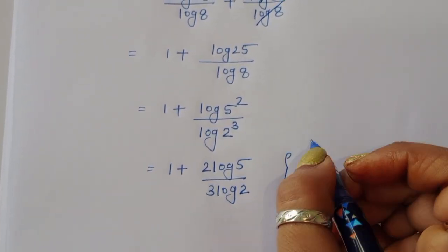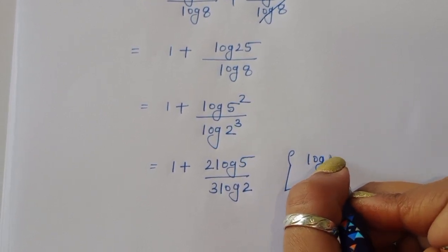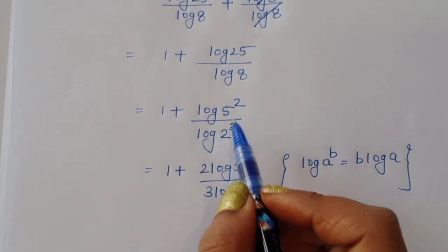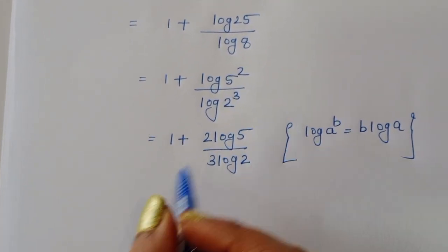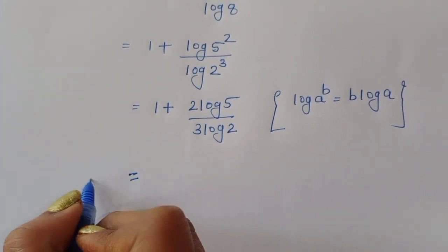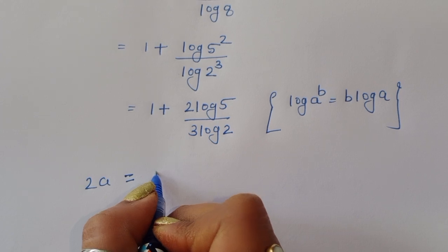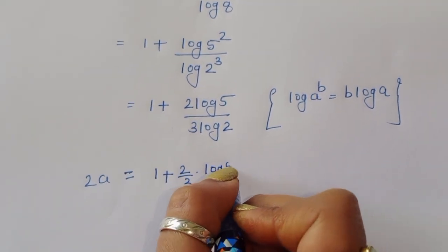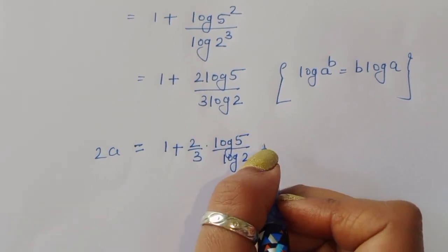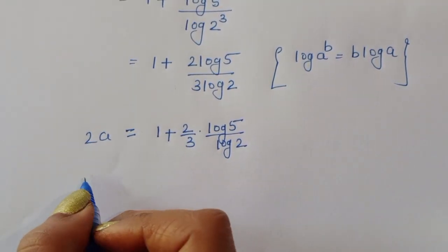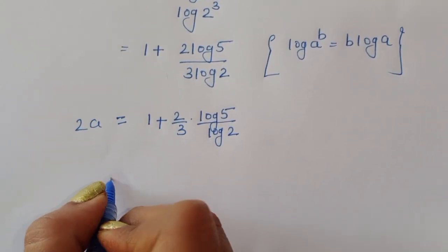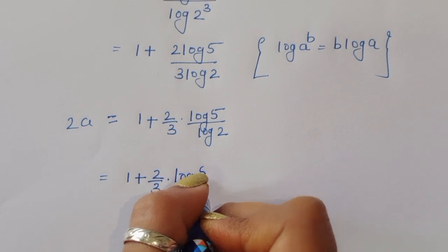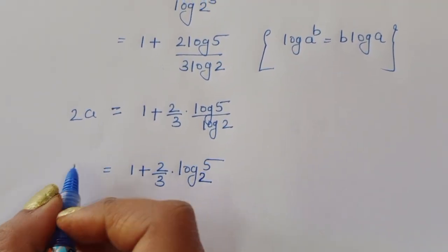Using the formula log of a power b equals b times log of a, this becomes 2 log of 5 divided by 3 log of 2. So 2a equals 1 plus 2 over 3 times log of 5 divided by log of 2, which is 1 plus 2 upon 3 times log of 5 to the base 2.